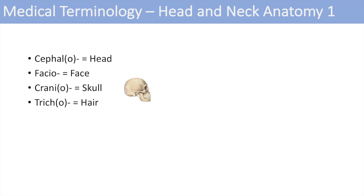The next one is tricho, which means hair. You might not hear this much, but you could have heard of the obsessive condition known as trichotillomania, or the obsessive need to pull out hair. The next one is stoma or oro — they both denote the mouth. So you might have heard of stomatitis, inflammation of the mouth.